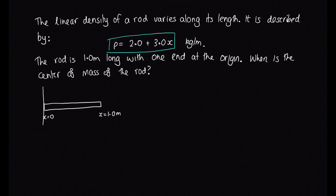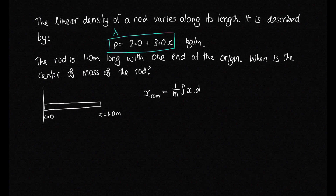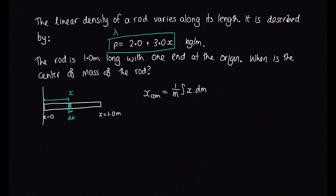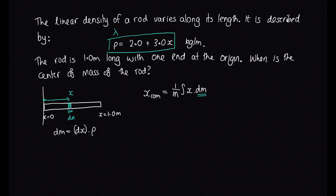This is a linear density, so you may sometimes see it written as lambda instead of rho — that's just a notation thing, either is fine. We have x for the centre of mass equals 1 over M times the integral of x dm. To apply this, we break the rod into little sections. Consider a small blue section at distance x along the rod with length dx. The mass of this little increment, dm, is just the length dx times its density.